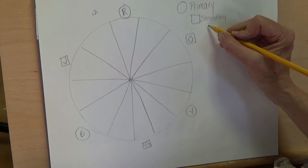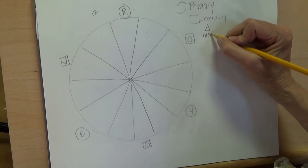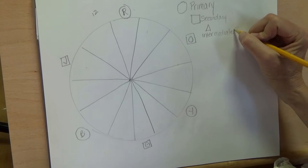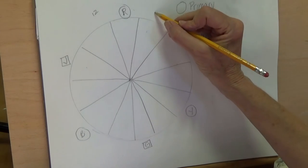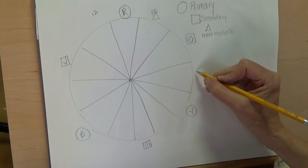Mark all of those just the way I did. Stop the video as you need. The blank ones are going to get a triangle and those are your intermediate colors. Intermediate colors are two-word colors like red-orange, yellow-orange.